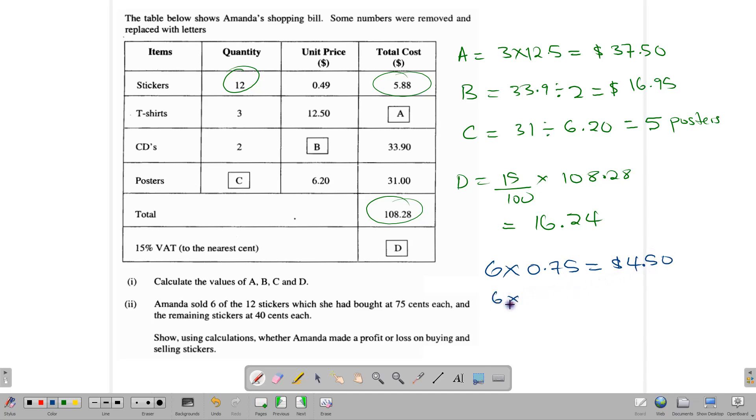The other six stickers are sold for $0.40 each. And we write $0.40 like this, $0.40. And that gives us $2.40.